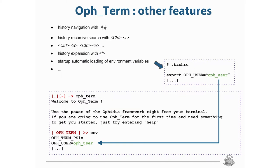Other features of the terminal include: history navigation with arrows; a history recursive search feature with Control+R; Control+A and Control+E to go to the beginning or end of your statement; history expansion with exclamation mark; and so on. You can also define, as I said before, in your .bashrc file the OPH_term environment variables.